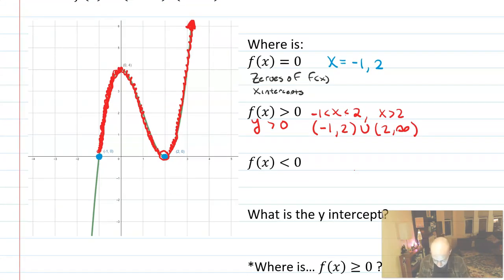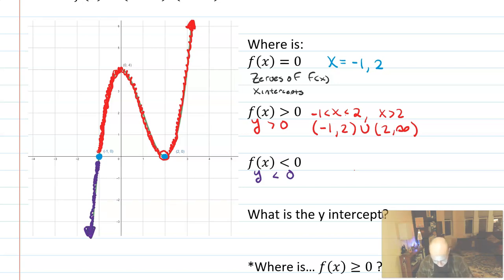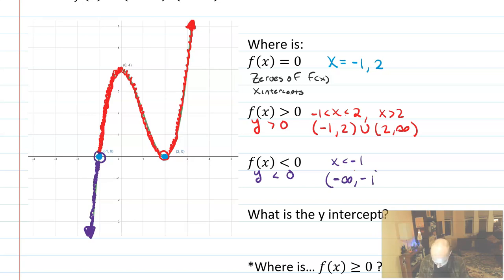For f of x less than zero, I'm looking at where the y values are less than zero. I'm going to shade in any point underneath the x-axis, skipping the blue point where y equals zero. As an inequality, I would say x less than negative 1. But as an interval more appropriately, I would write negative infinity up to negative 1, parentheses.